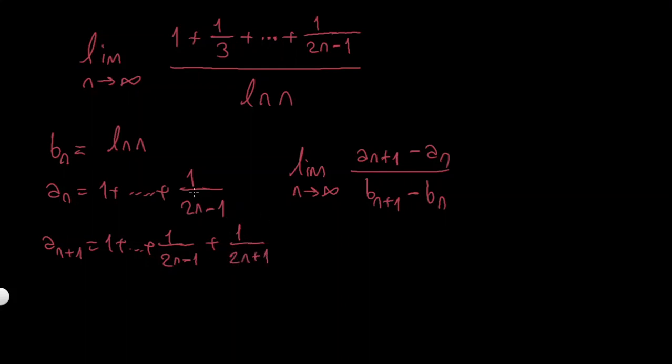so if I just subtract them I'm going to get limit as n goes to infinity, it's going to be 1 over 2n+1. I'm writing it here, and this is going to be ln n, so b(n+1) minus bn is just going to be ln n, and I can say this is just division...